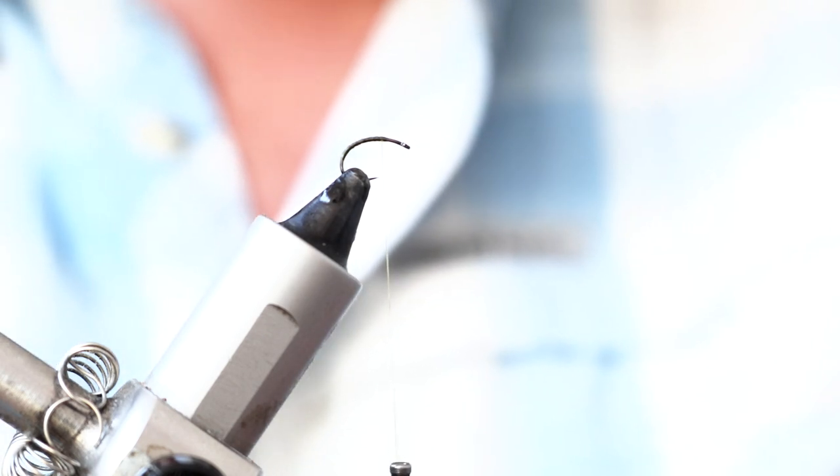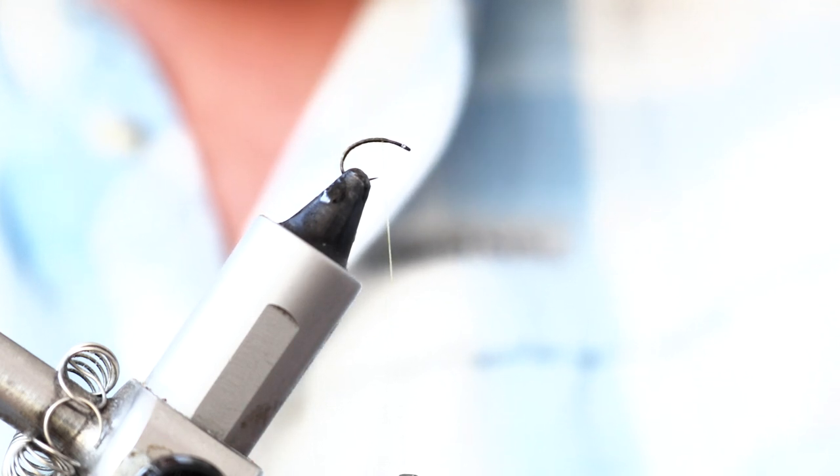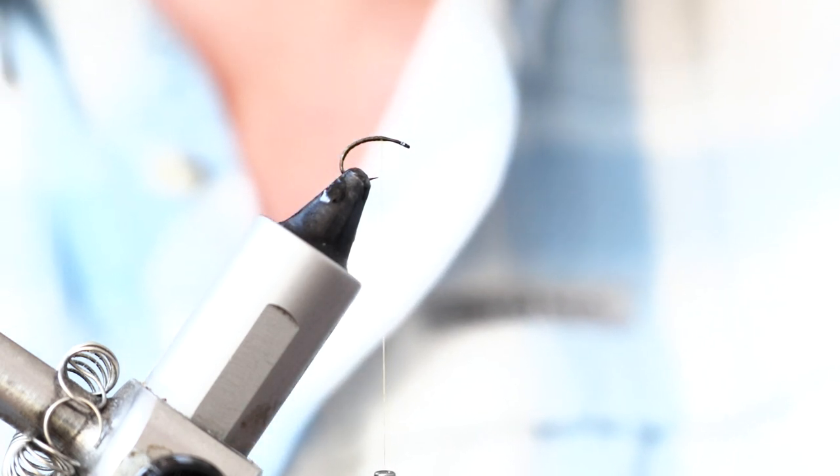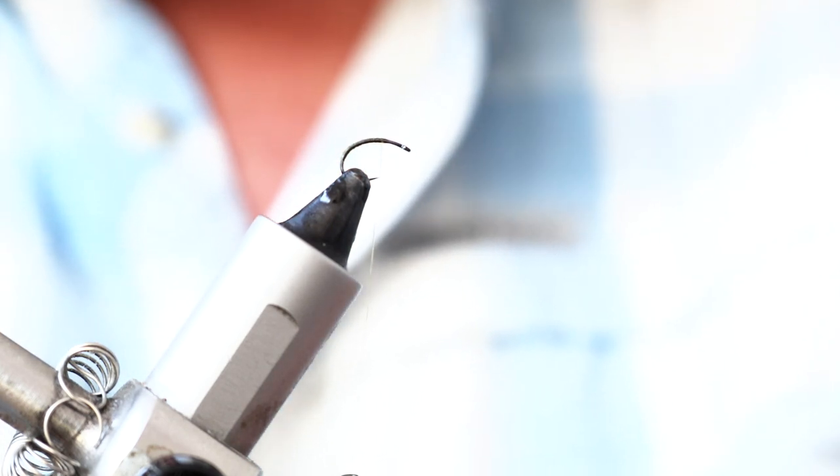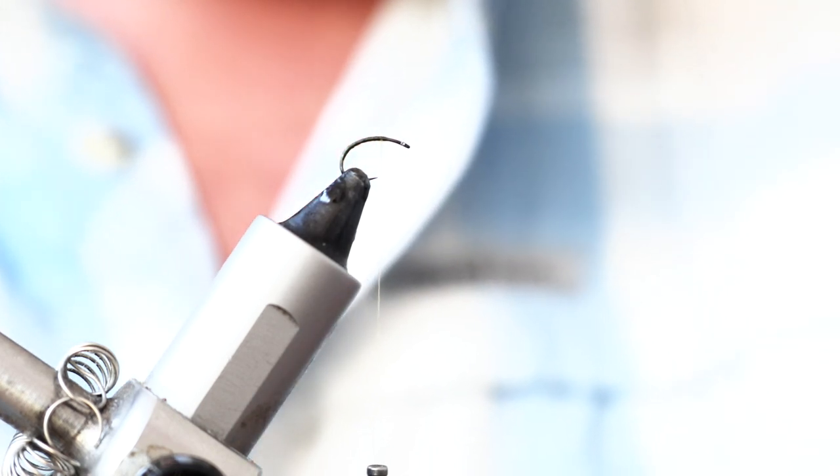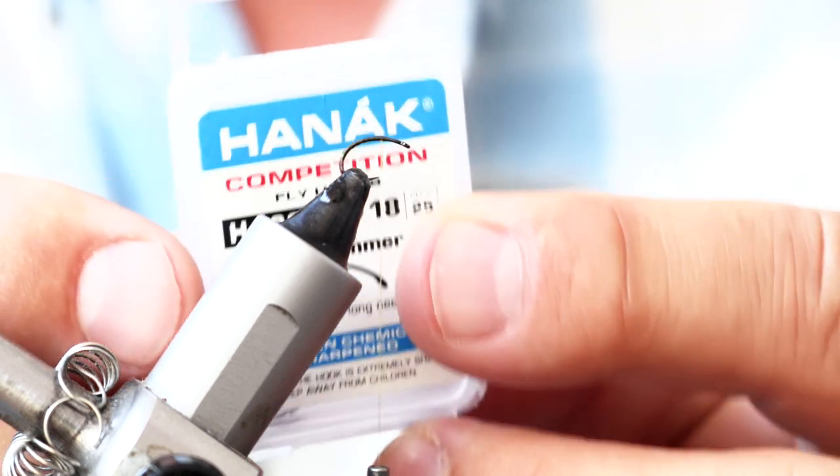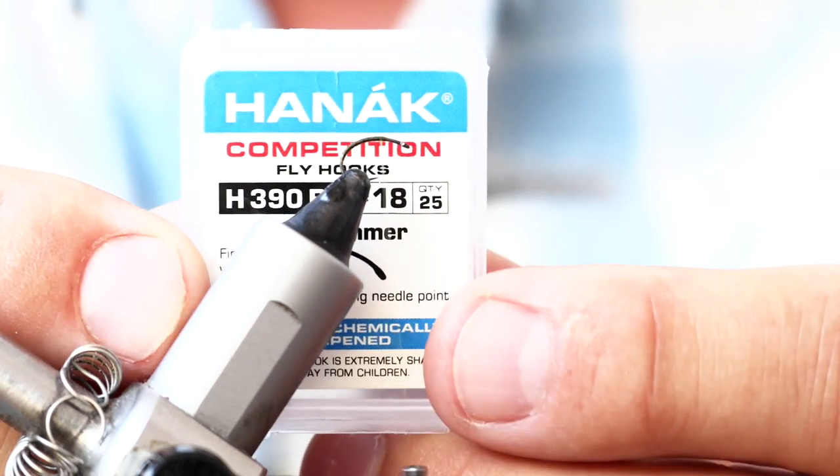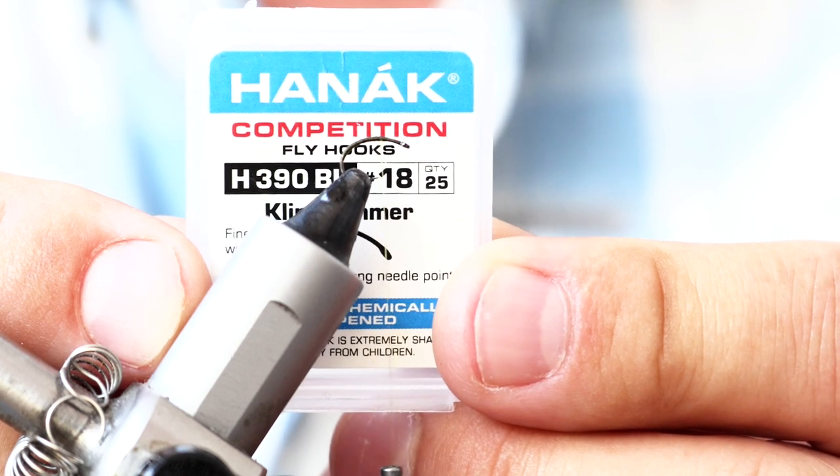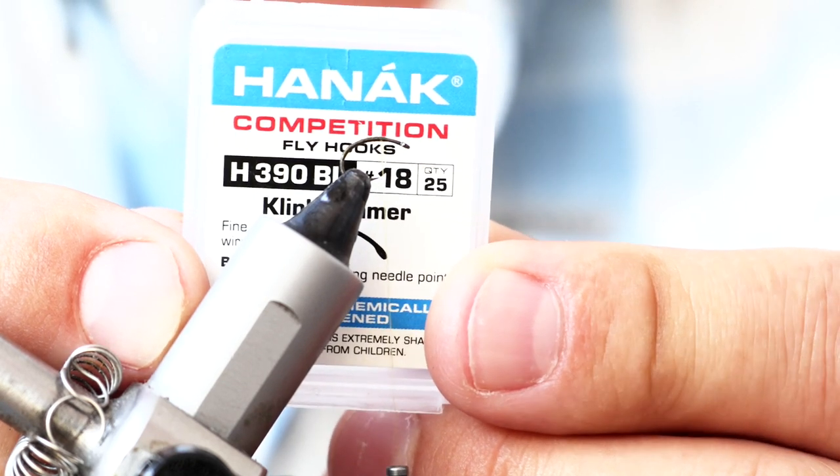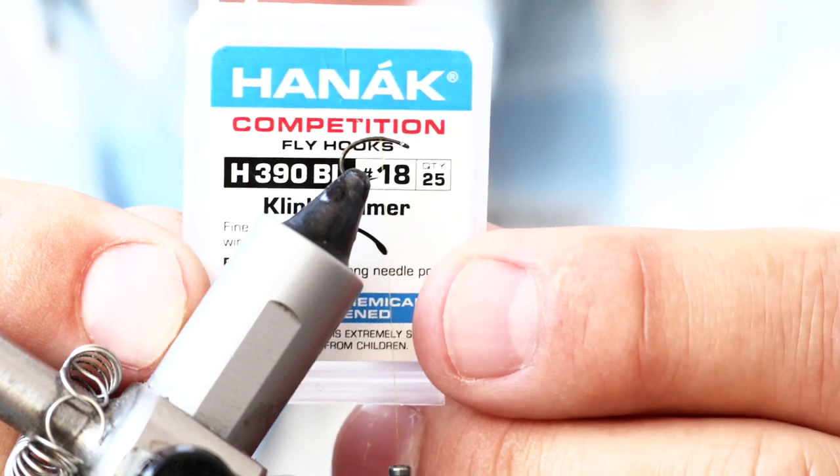I've already put my tying thread onto the hook, and that's a Semperfly nanosilk, really super fine silk. The hook is my favourite clink hammer hook, which is a Hanak H90BL, and this is in size 18, although I do tie this fly in size 20 as well.